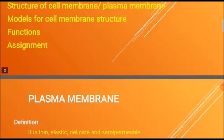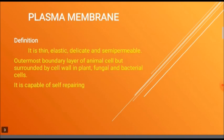Cell membrane is also known as plasma membrane, which is defined as a thin, elastic, delicate and semi-permeable membrane. It is the outermost boundary layer of animal cells, but is surrounded by a cell wall in plant, fungal and bacterial cells.